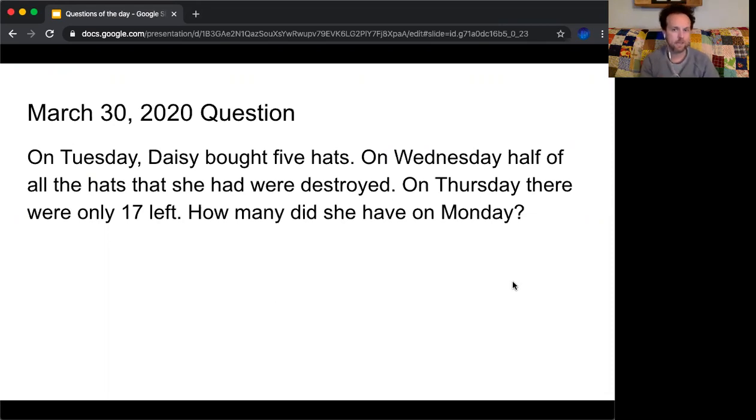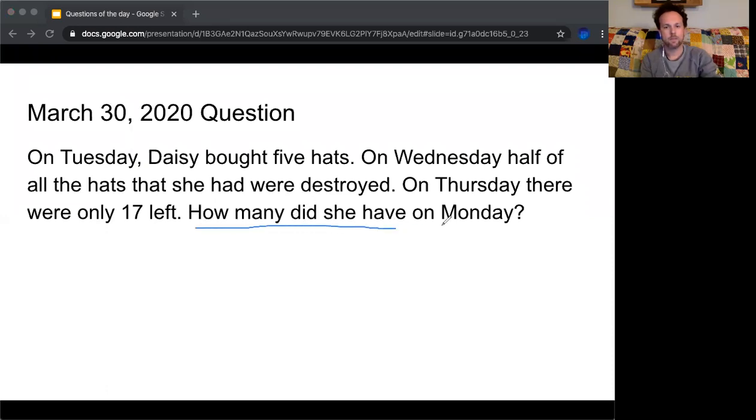What this is asking us is really how many hats she started out with. So again, I'm going to look for the numbers I have in word form, the number five. I have a half, which is one half, which tells me I'm going to either multiply by one half or divide by two. And that at the end, she had 17 left. So I circled the numbers.